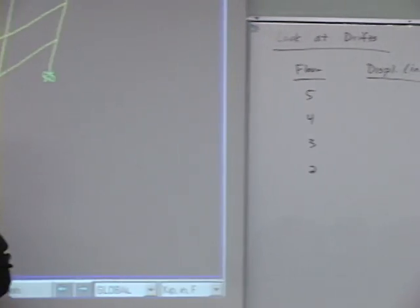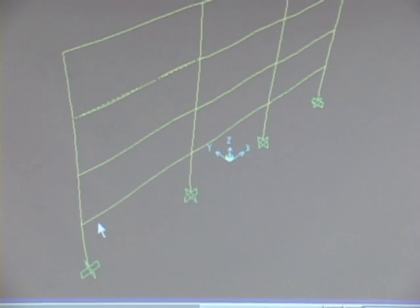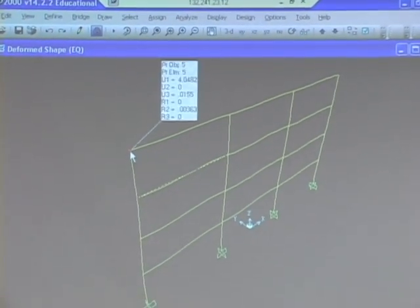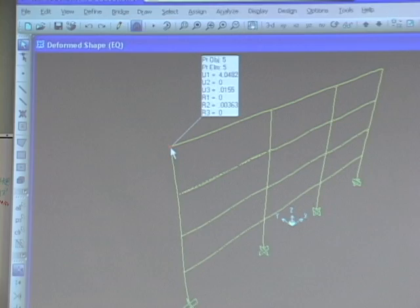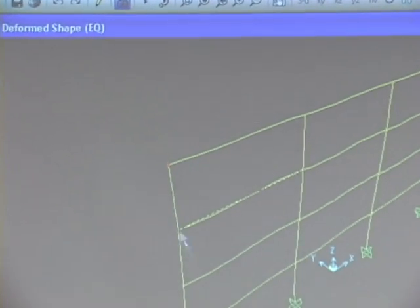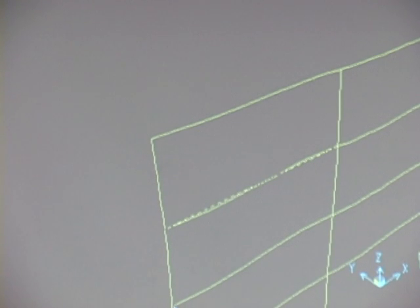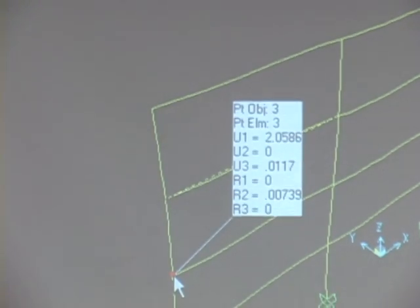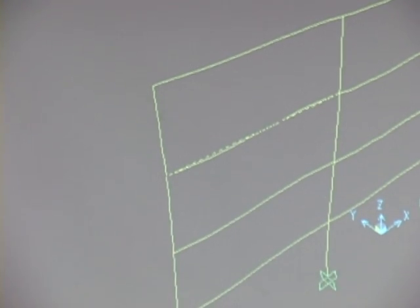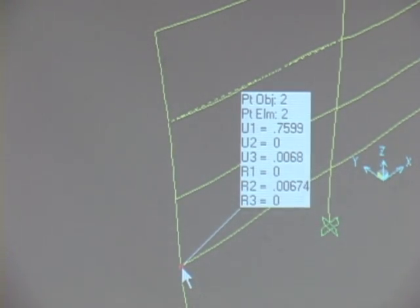So if I go to the top floor, write these down: 4.05 inches. Next one down, 3.24, 2.06, and 0.76.